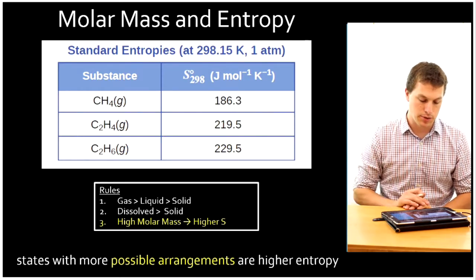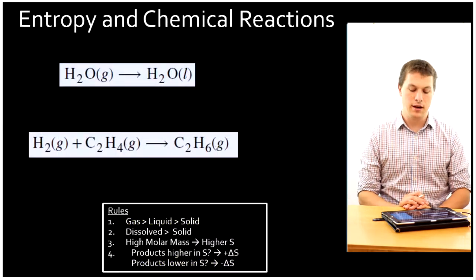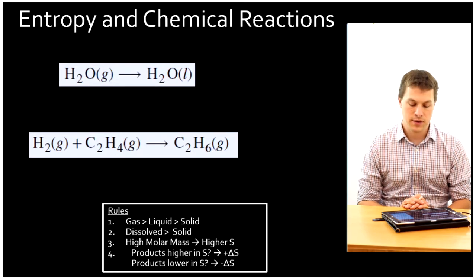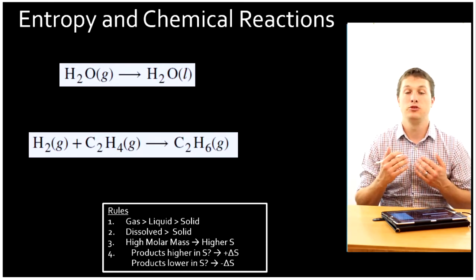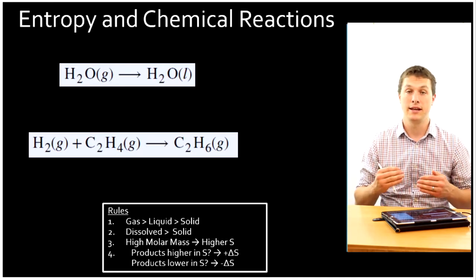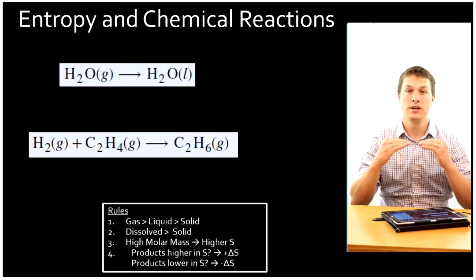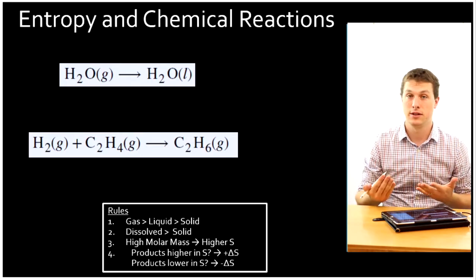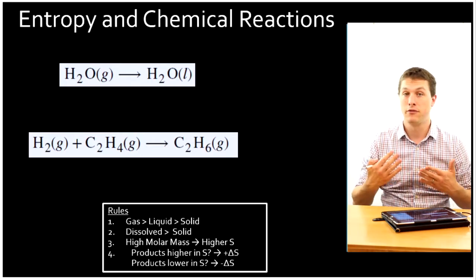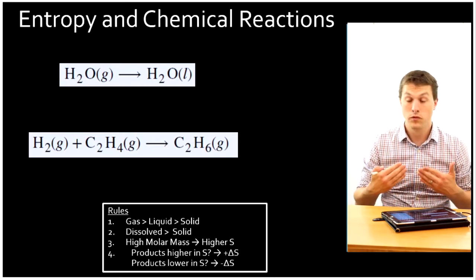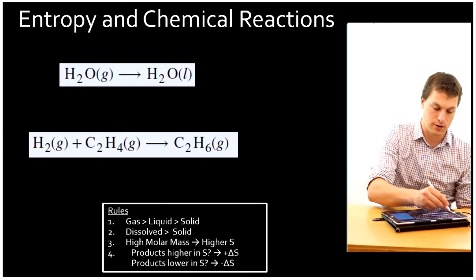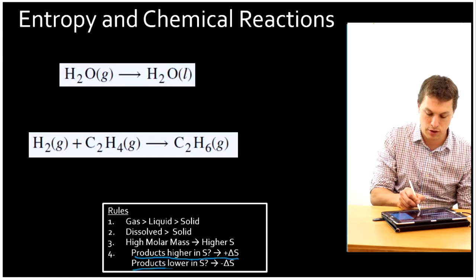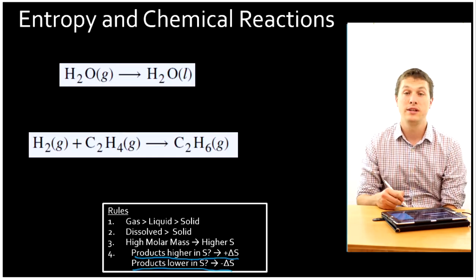Lastly, let's look at chemical reactions. We have to decide whether the products are higher in entropy than the reactants or lower. If the products are higher in entropy, that means we've gone through an entropy increase — delta S has gotten higher, meaning we have a positive delta S. On the other hand, if our products have lower entropy than the reactants, that means we have a negative delta S. So: if our products are higher in S, we have a positive delta S; if our products are lower in S, we have a negative delta S.